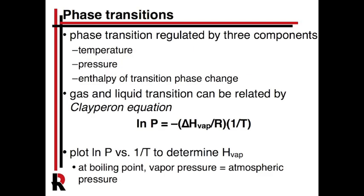This lab concerns itself with the transition between phases, in this case boiling from liquid to gas. You've seen the phase diagrams with the line between the liquid and gas phase. The way that phase transition happens is regulated by three components: temperature, which is the obvious one, pressure is also another component, and finally the amount of energy it takes to actually execute the phase change, which we call the enthalpy of vaporization.